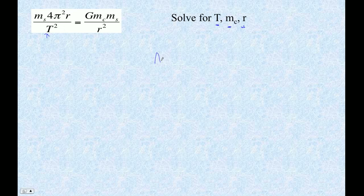That's not too hard. So mass of the satellite, 4 pi squared r over t squared equals g mc ms over r squared. Satellite mass goes the way of the bison. We're going to cross multiply. So 4 pi squared r, and then r times r squared is r to the third. And then that equals g mc t squared.